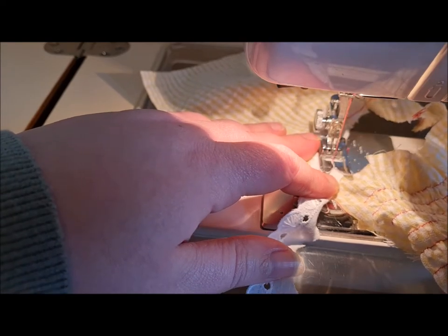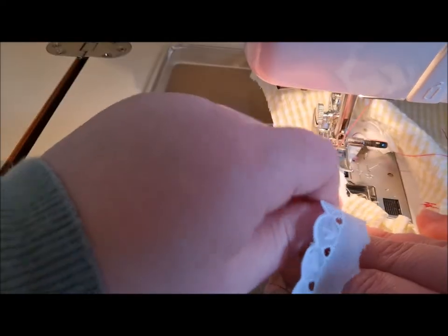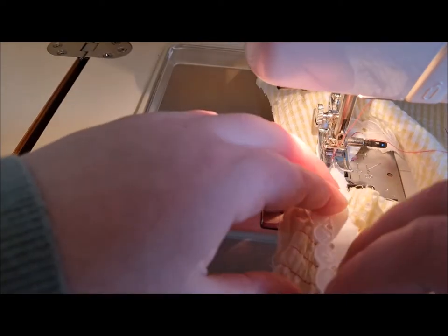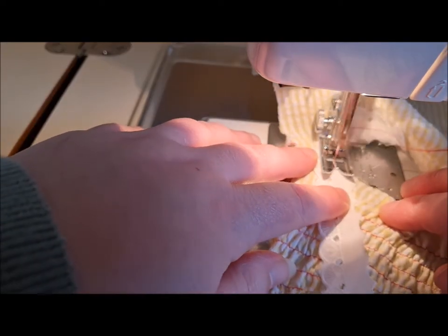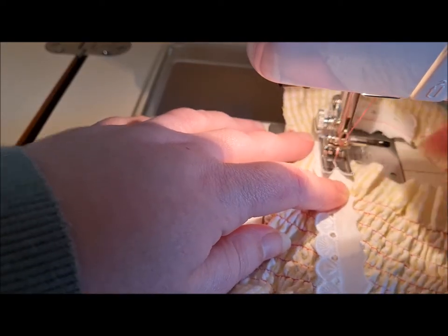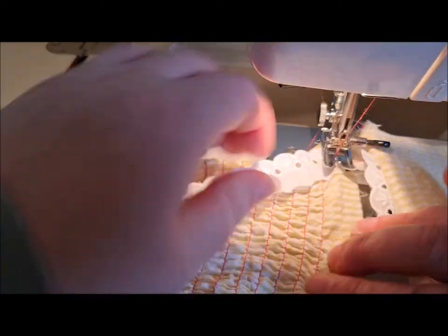When you get to the corner, pop your needle down, lift the foot up, and come down this side here, which is the inside shoulder, the inside neckline. You want to stop again. Now this is our shirred part, so this is going to have to be pulled ever so gently open.